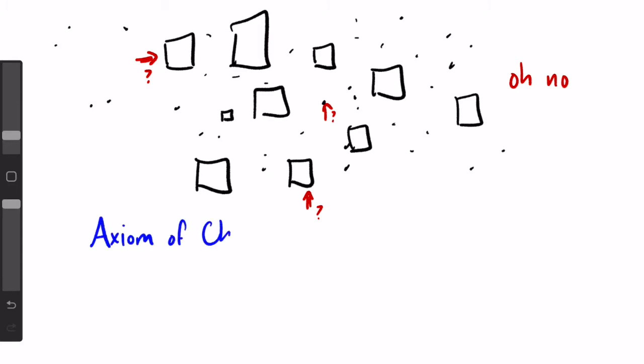The axiom of choice tells us, it's okay if you can't figure out how to order these boxes so you can pick from each and every one. I'm telling you that there is some way to pick a cat from each box anyway. Even if we're not sure exactly what's in this super fun chosen set over here, which will be uncountably infinite, the axiom of choice tells us that at least it exists.